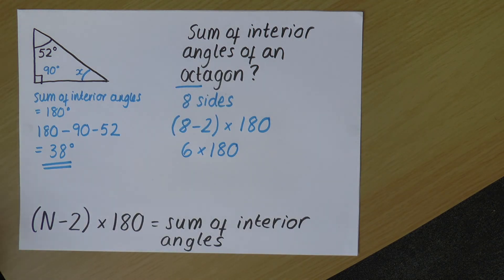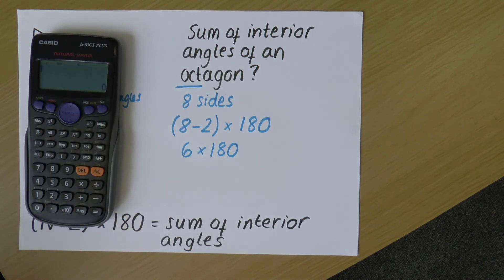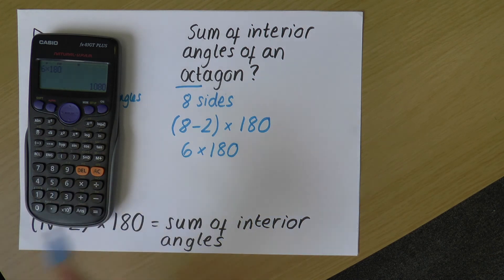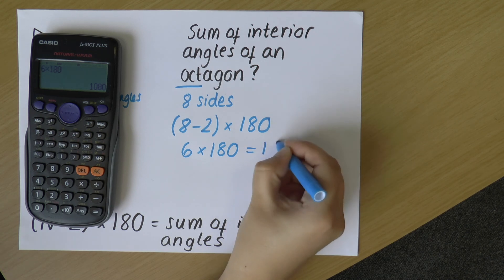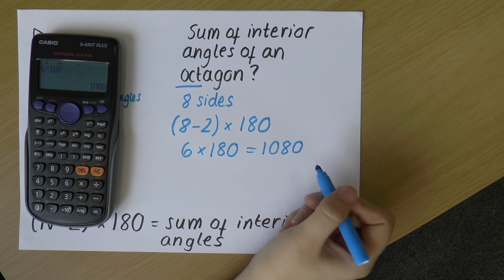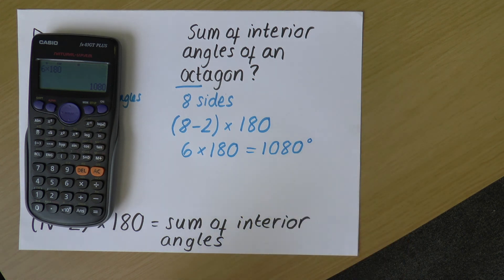Again, I'm not going to try and do that in my head. I'm going to pop it in my calculator. So six times 180 is 1080. And that is the sum of the interior angles in an octagon. And because it's an angle, I need to have that degrees symbol there.